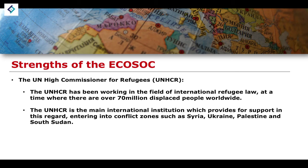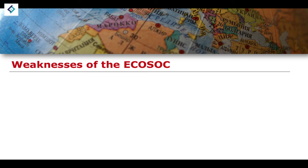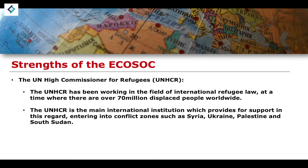The UN High Commissioner for Refugees represents the main international institution providing support on this issue. They enter conflict zones in Syria, Palestine, and South Sudan. As of recently, one of the largest refugee crises seen in Europe in the last few years is the Russian invasion of Ukraine in March 2022, which led to millions of Ukrainian refugees fleeing into countries like Poland and Germany and spreading across the rest of Europe. Conflict zones in Syria, Palestine, and South Sudan remain very important, as do newer conflicts like Ukraine.